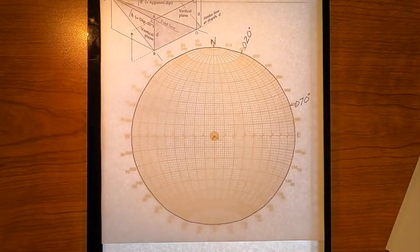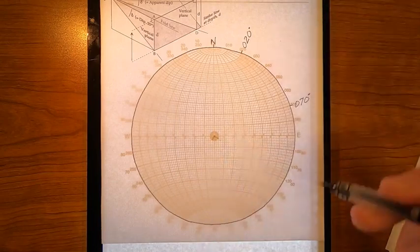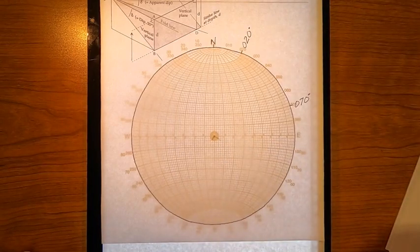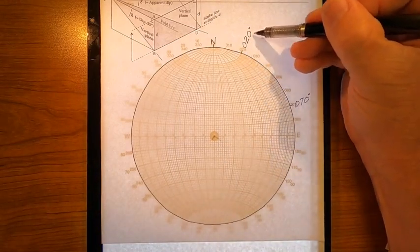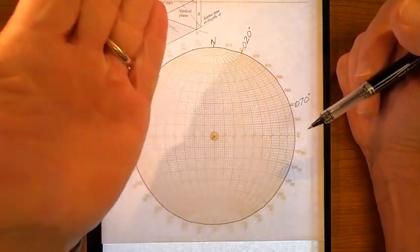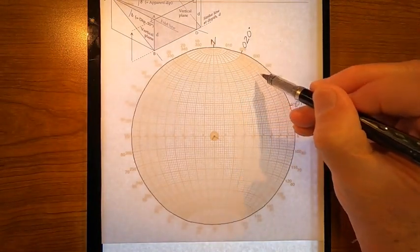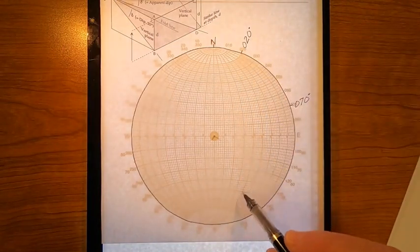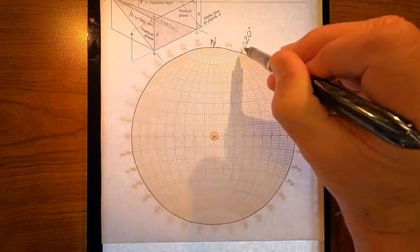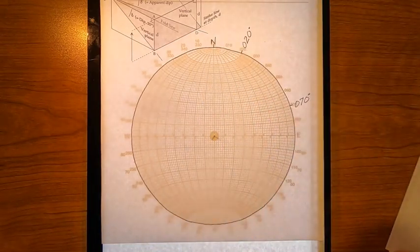I am now anticipating how this is going to look. I need to represent the plane itself as a great circle for this problem. The plane strikes 020. It dips 35 degrees to the southeast, which means that a great circle representing that plane is going to be over here like this, and it's going to be aligned along one of these great circles at a 35 degree angle.